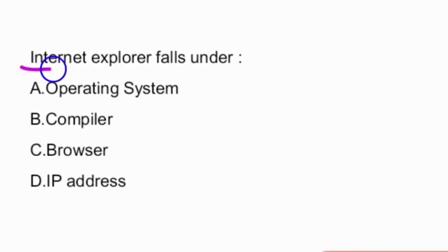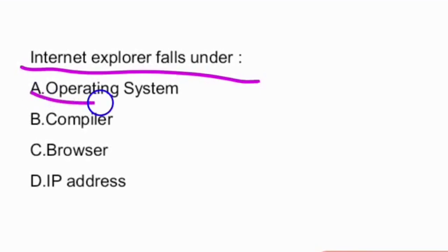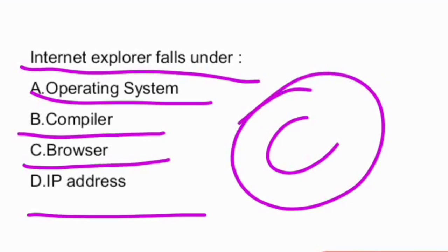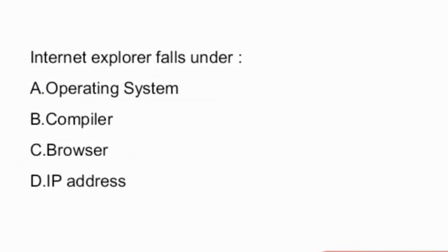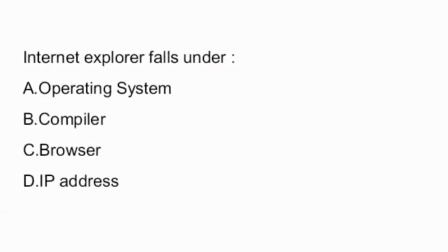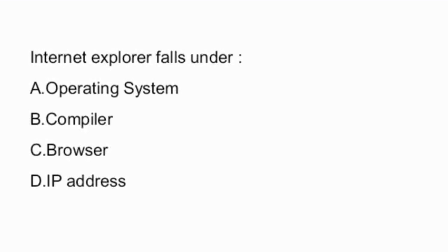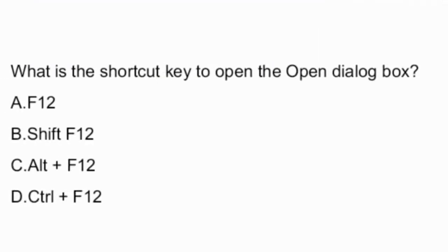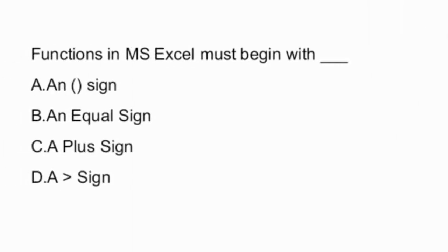Next question: internet explorer falls under — options are: operating systems, compiler, browser, IP address. Internet Explorer is a browser — that is option C, the right answer. So these are the various questions related to computer basics, very much important for Singareni Collieries Junior Assistant exam. That's all for this video, thank you.